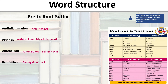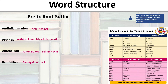Word structure. Knowing word structure can also help you find the meaning of words in context. Words are made up of a prefix, a root, and a suffix. For example: anti-inflammation — 'anti' means against. Arthritis — 'arthro' means joint and '-itis' means inflammation. Antebellum — 'ante' means before and 'bellum' means war. And 're-' means again and back. Knowing word structure can help you identify the meaning of words in context.